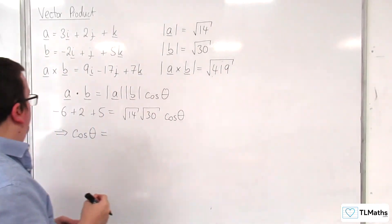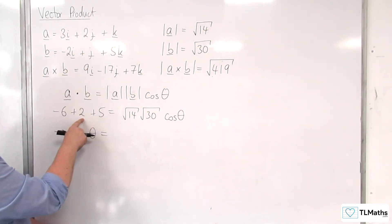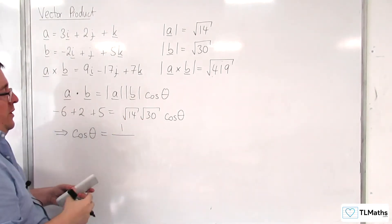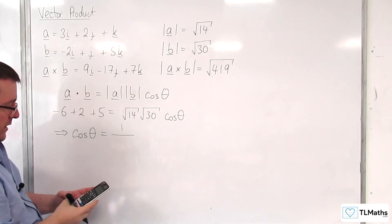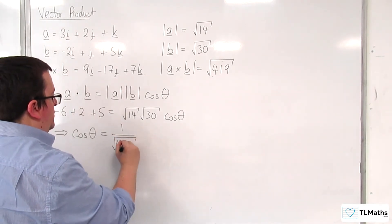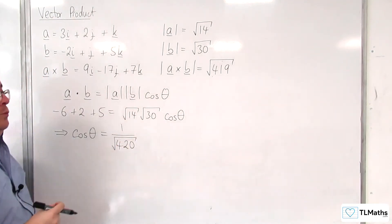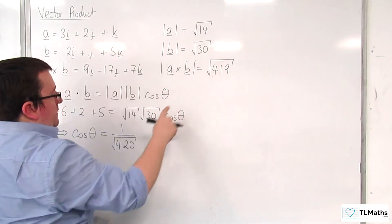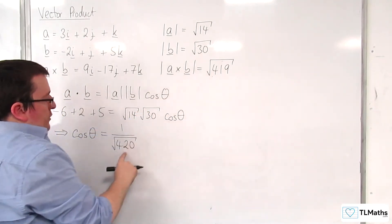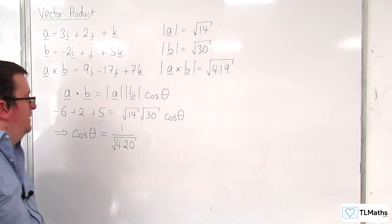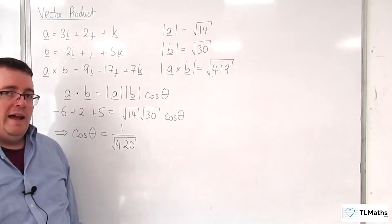So, we have minus 6 plus 2 is minus 4 plus 5 is 1 over root 14 times root 30. So, 14 times 30 is 420. So, that would be the square root of 420. Now, you should already be kind of going, that's interesting how we're only one away from the 419 that we had previously.